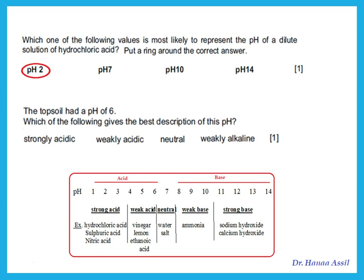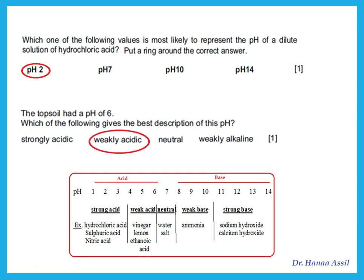If something has a pH of 6, which of the following gives the best description? You should realize that pH values of 4, 5, or 6 represent a weak acid.